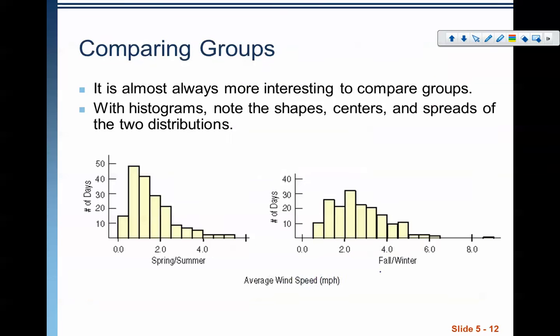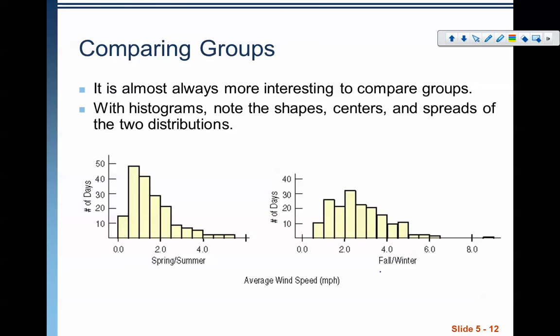So on this next slide, we have that same data. This is the same average wind speed data, but it is now broken up between the spring and summer months and the fall and winter months. So we can do that same description of these, but we will now do the same thing where we're talking about GSOCs. But when we compare the two, we need to write comparative statements about our GSOCs.